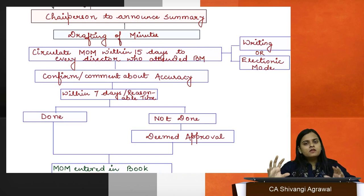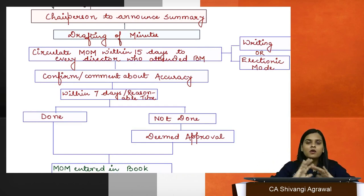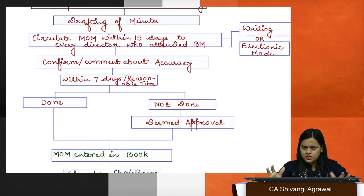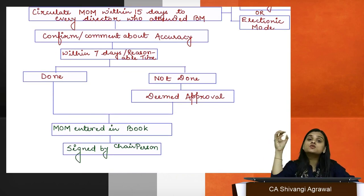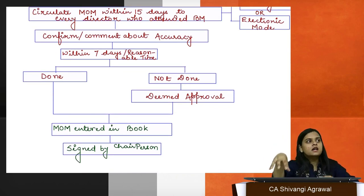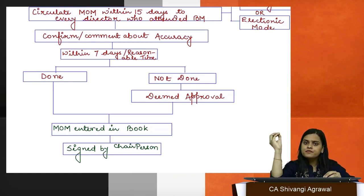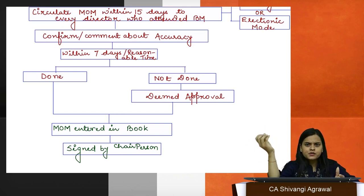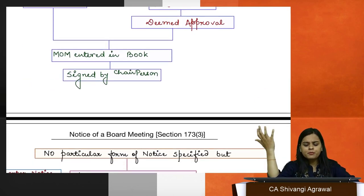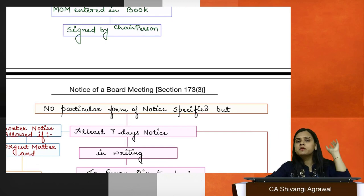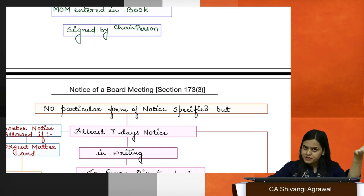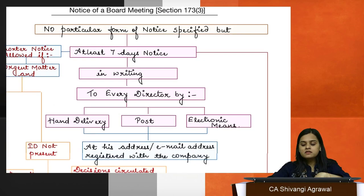Voting happens by roll call — voting and roll call alternate. The chairman announces a summary at the end; anyone with objections may raise them. After that, minutes are drafted — a true and correct record put in writing. The minutes are circulated to all attending directors, who have the option to comment on accuracy within seven days. Silence implies deemed approval. After incorporating any objections, minutes are entered in the minutes book under section 118, open for inspection under section 119, and signed by the chairperson.